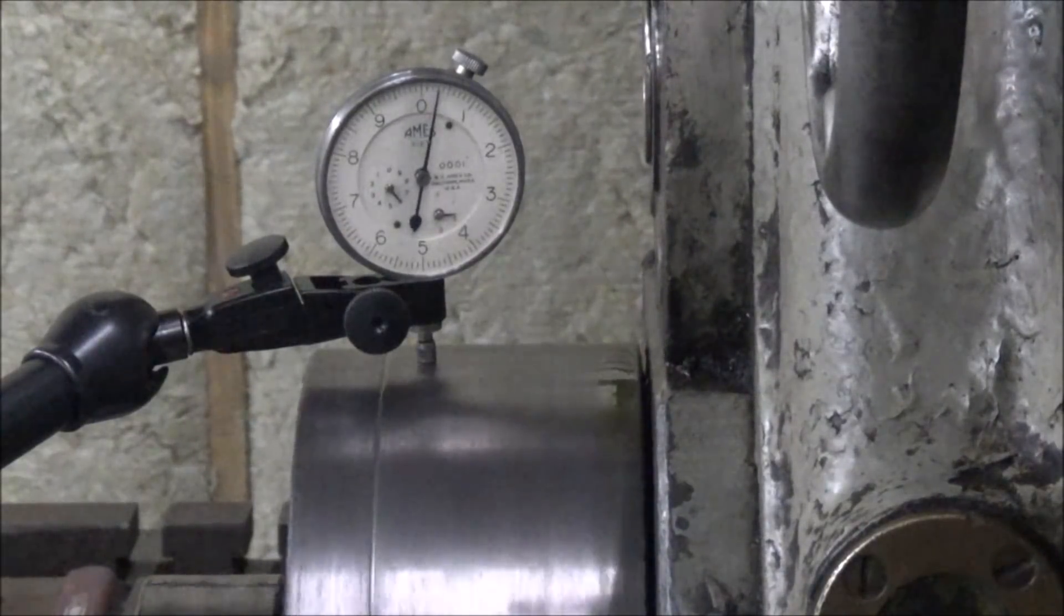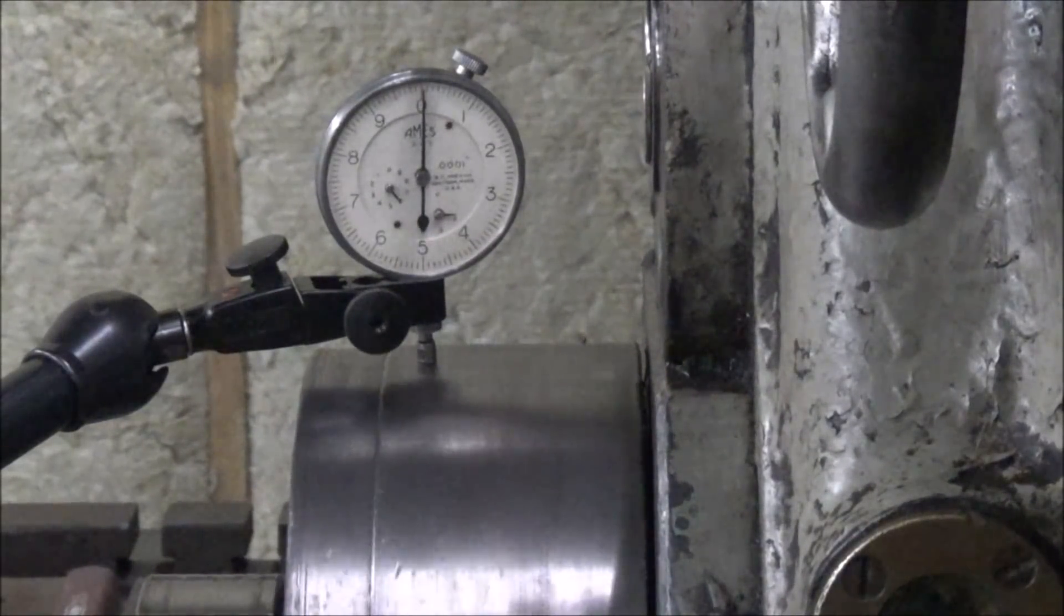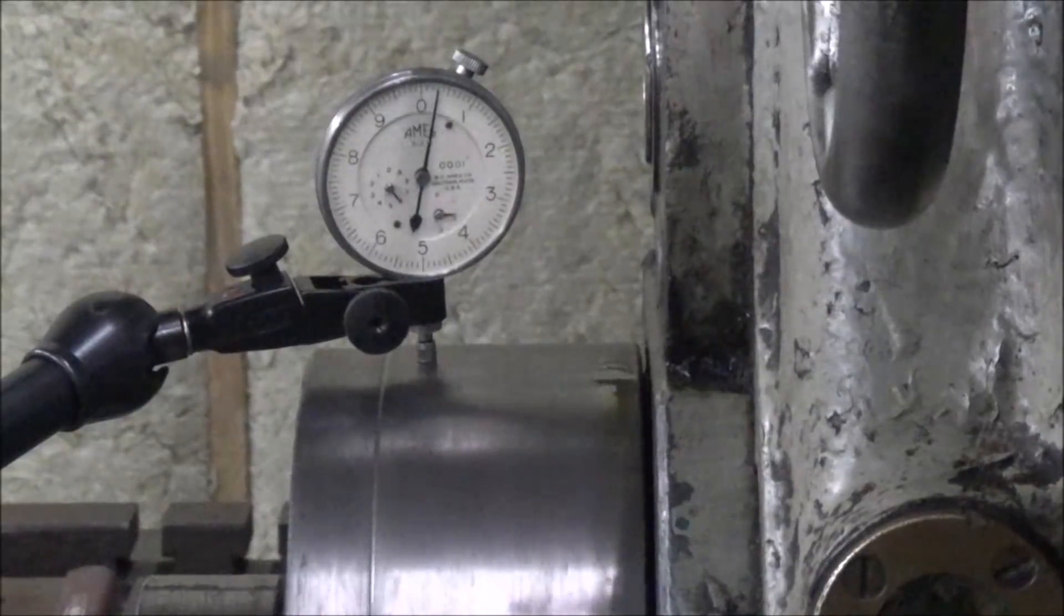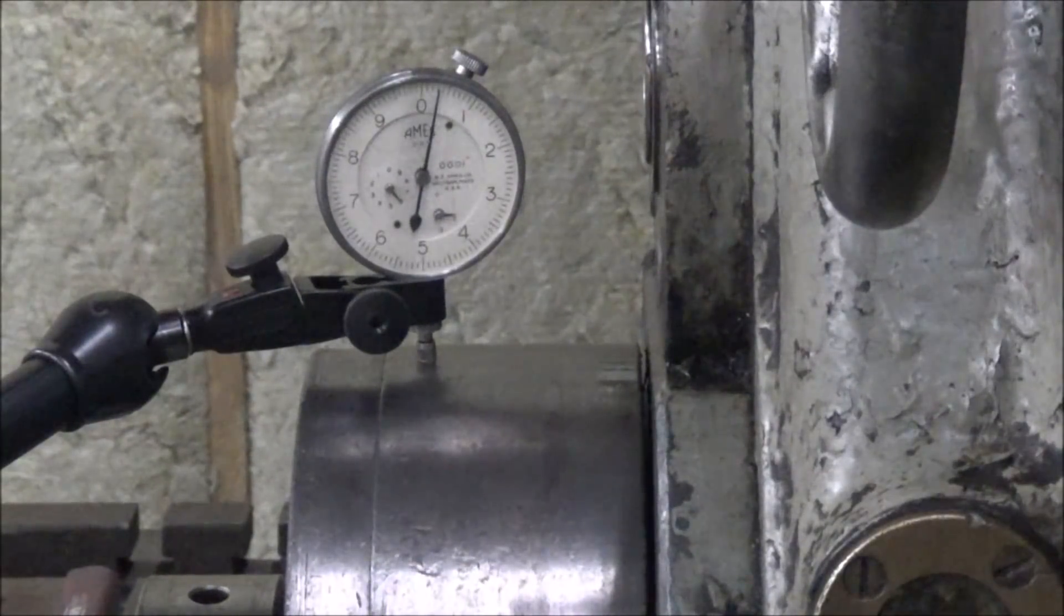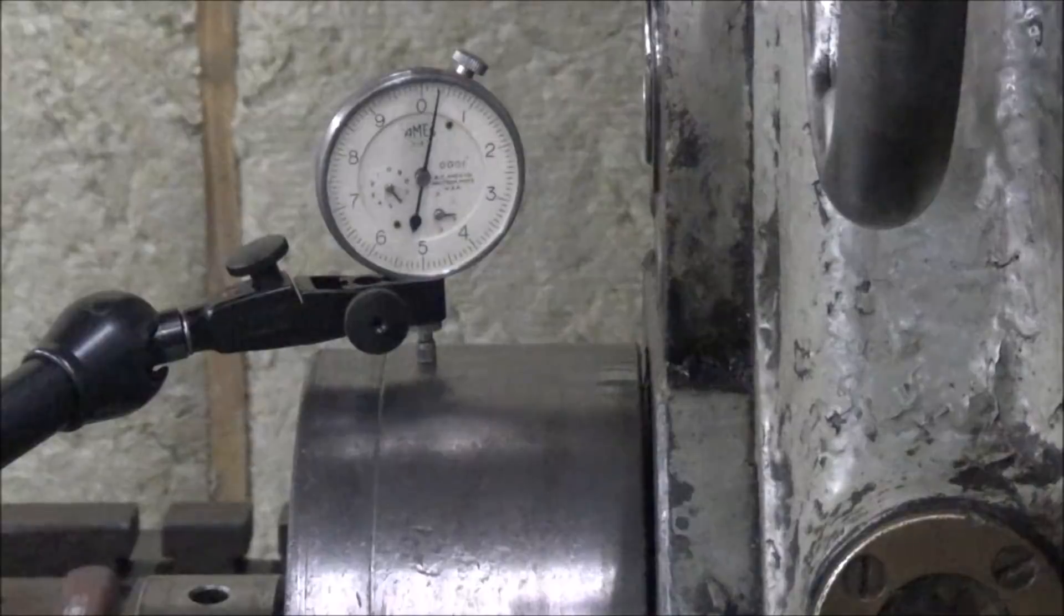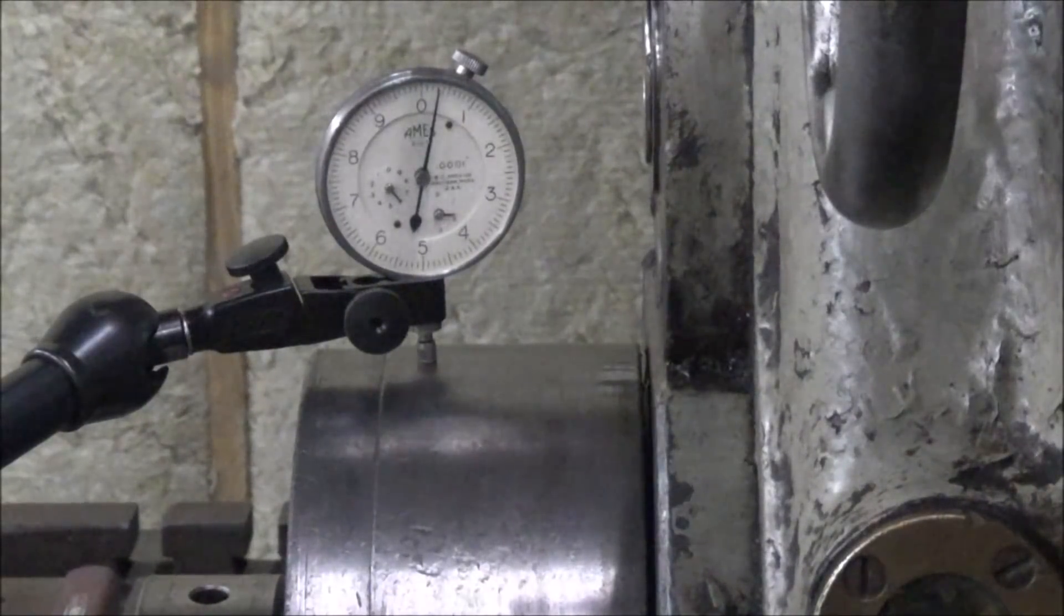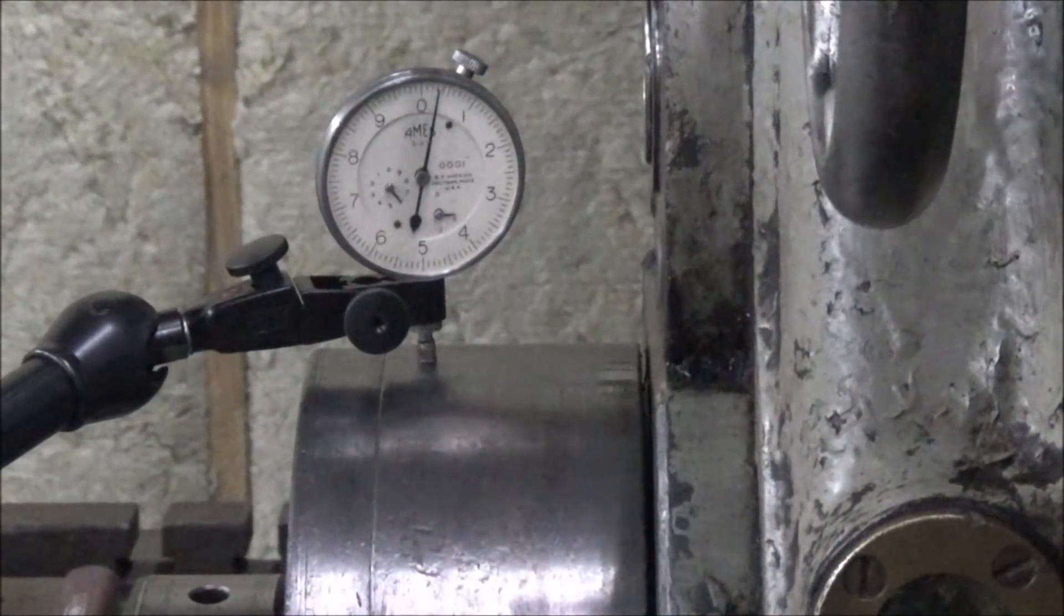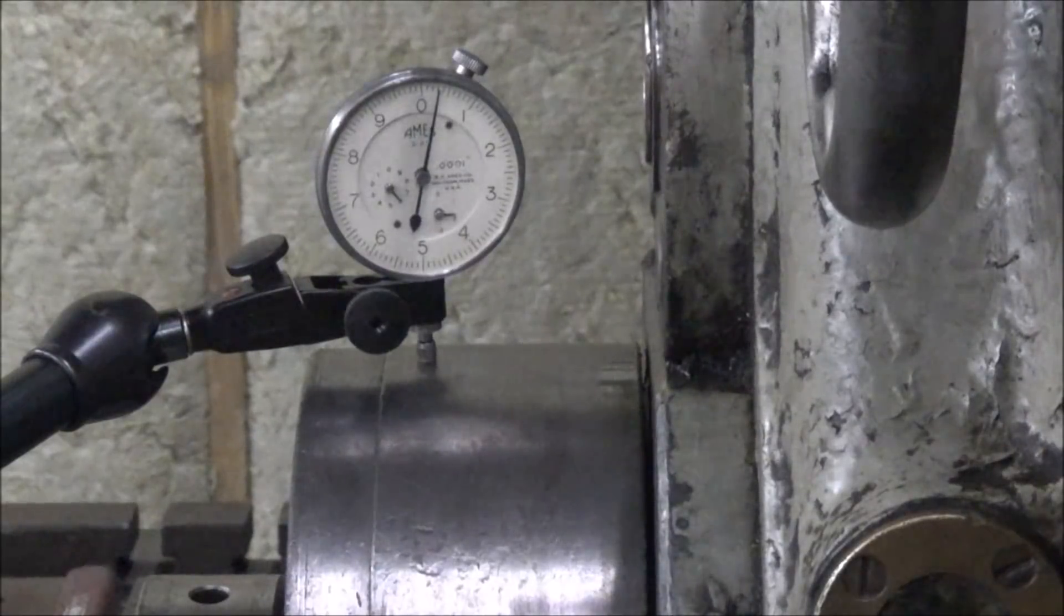Still probably less than a half a thou, which is good for a machine like this, I think. It's not uncommon for me to see a thou and a half to three on the Cincinnati on the spindle. But let's check the ram.